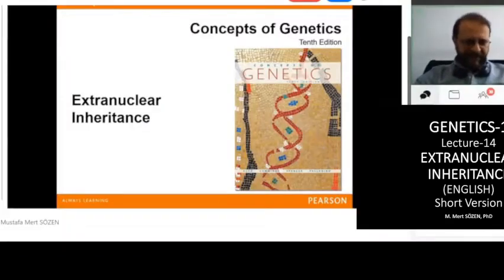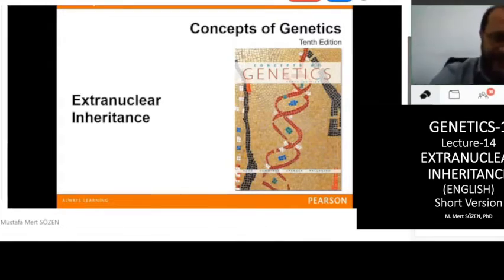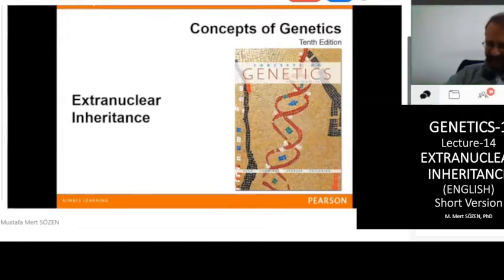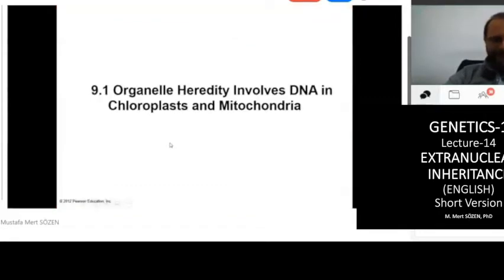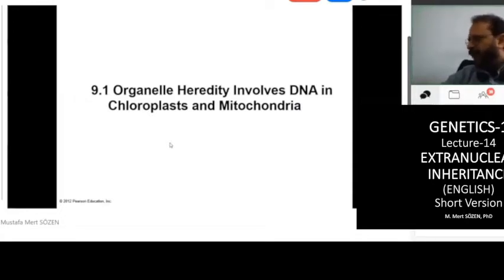Today we will learn about a different type of inheritance. We already know Mendelian inheritance, different kinds of dominance, sex-limited inheritance, sex-influenced inheritance, and so on. Now we will learn a different parameter to add to Mendelian laws — that's extra nuclear inheritance. The genes we have investigated so far were all on the chromosomes, on the nuclear DNA. So what happens if the gene is on mitochondrial DNA or chloroplast DNA?